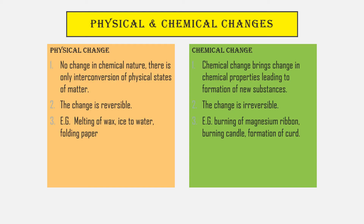Let us look at the difference between a physical and chemical change. This is a revision, as you have been studying about this from class 6 onwards. A physical change is a change where there is no change in the chemical nature of the substance — only inter-conversion of physical states of matter. A chemical change brings a change in chemical properties, leading to the formation of new substances. A physical change is reversible; a chemical change is irreversible.